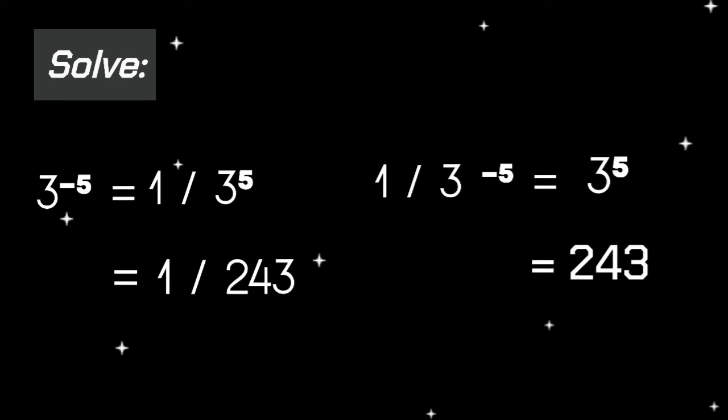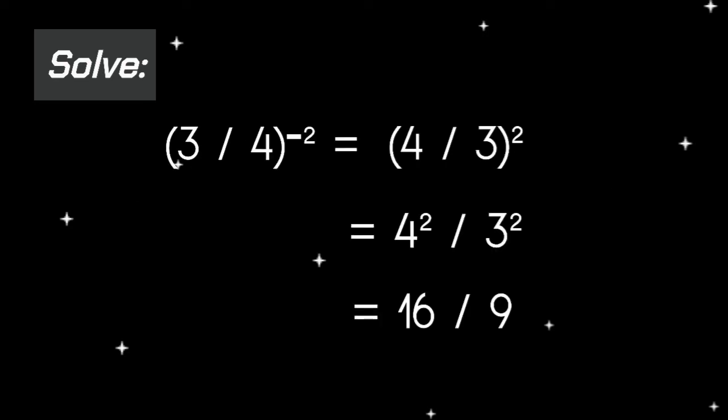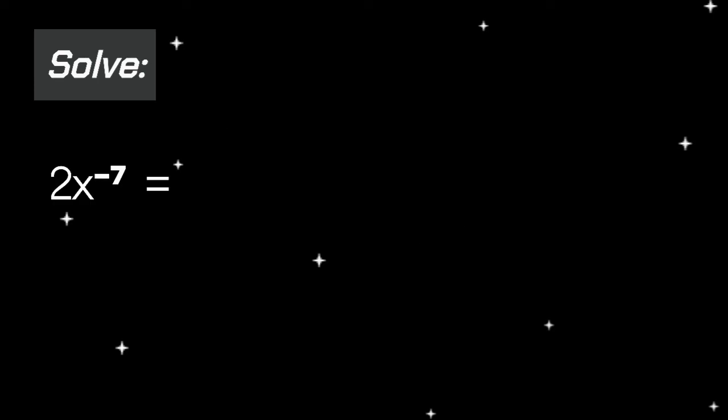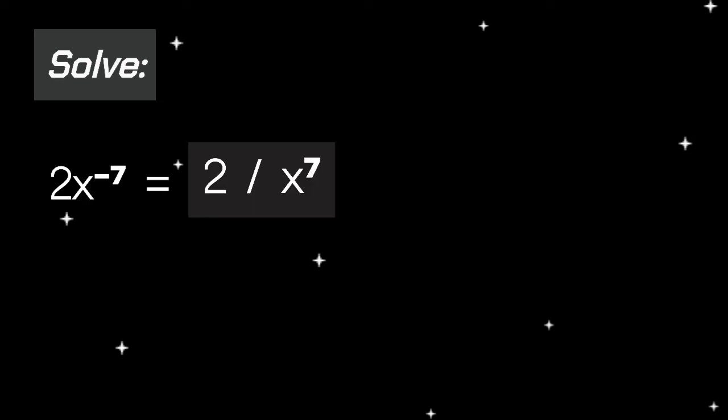But what if the whole fraction is raised to a negative power? It's just as easy: just reciprocate, then distribute the exponent, and then multiply. Next, 2x raised to the power of negative 7. We separate only the term with the negative exponent, so that would be equal to 2 over x raised to the power of 7.